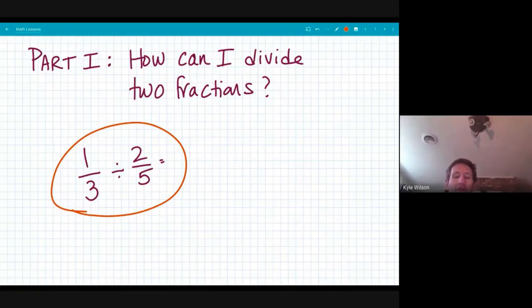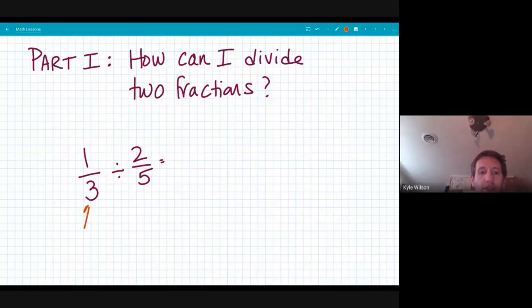What I'm going to start with here is you have these two fractions. You have one-third divided by two-fifths. Going back to some of this division background knowledge that we have, one-third is our dividend.